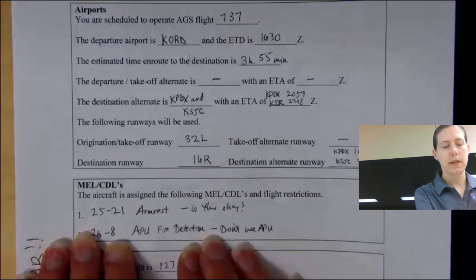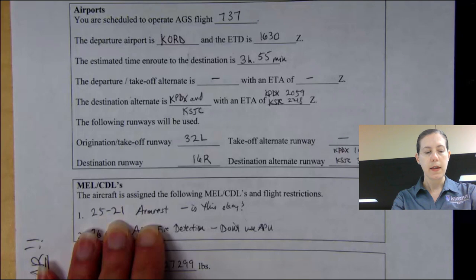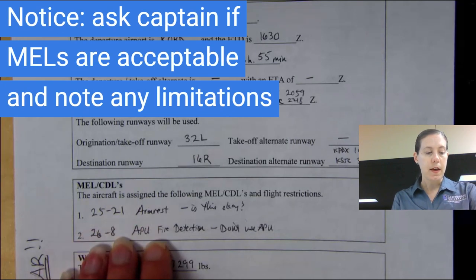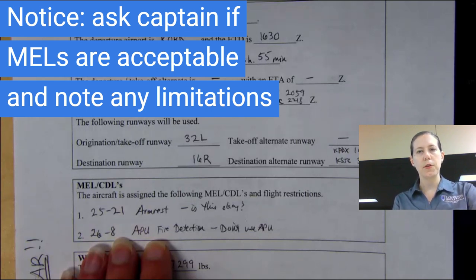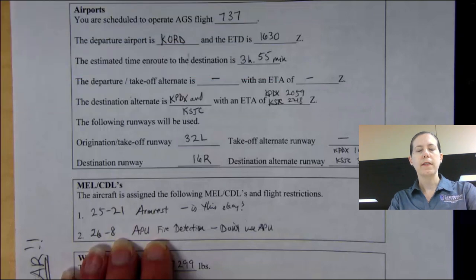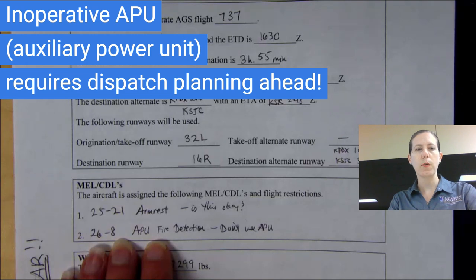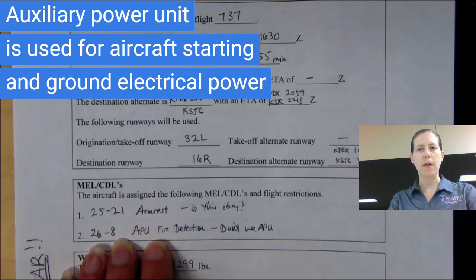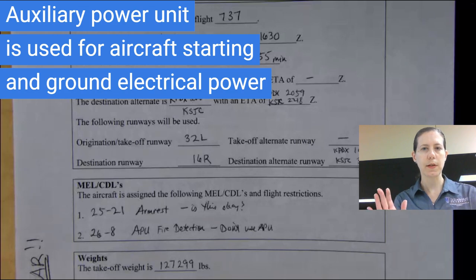The aircraft has a couple of MELs I need to talk with you about. First, we have an armrest that is inoperative — it's been removed — so I want your confirmation that that's okay for today's flight. With your permission, we can still dispatch the aircraft without the armrest. Secondly, our auxiliary power unit fire detection system is inoperative. That's MEL number 26-8 for the 737, which prevents you from using the APU. I've already checked and Seattle has a ground power unit and a starting unit, so there's no problem there. Chicago O'Hare also has all the equipment needed to start the aircraft without the APU.